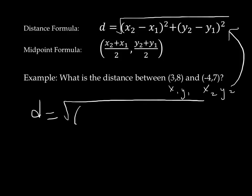So x2, I have chosen as negative 4, minus x1, I should say, which is 3 squared, plus y2, which is 7, minus y1, which is 8, also squared.